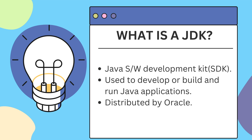Now let us understand what is a JDK. JDK stands for Java Development Kit. But before we move on, let us understand what is an SDK, which is Software Development Kit. Basically, SDK is a set of tools to build or develop an application for a specific platform or language. In this case, if you're using it to build Java applications, it is called JDK — Java Development Kit.